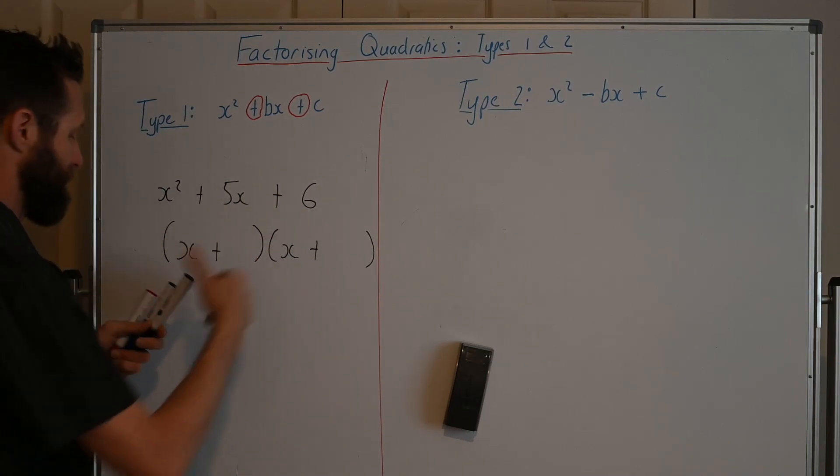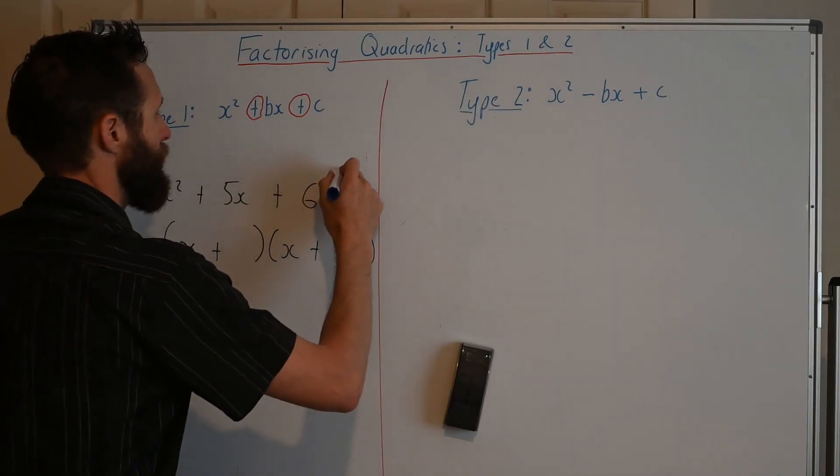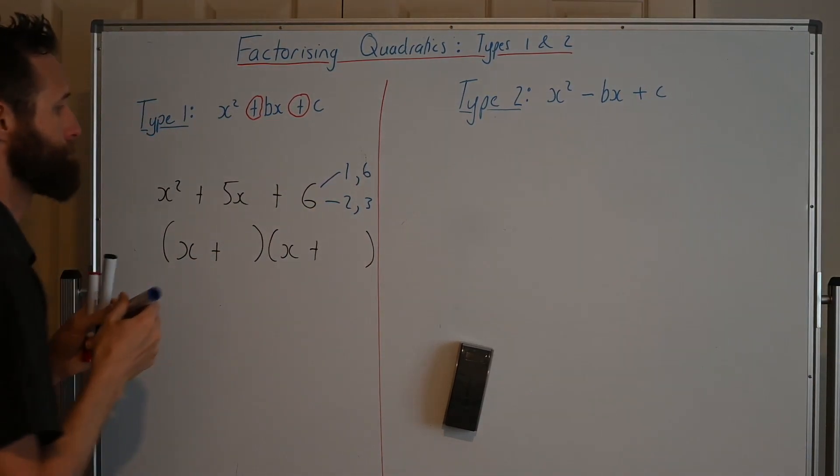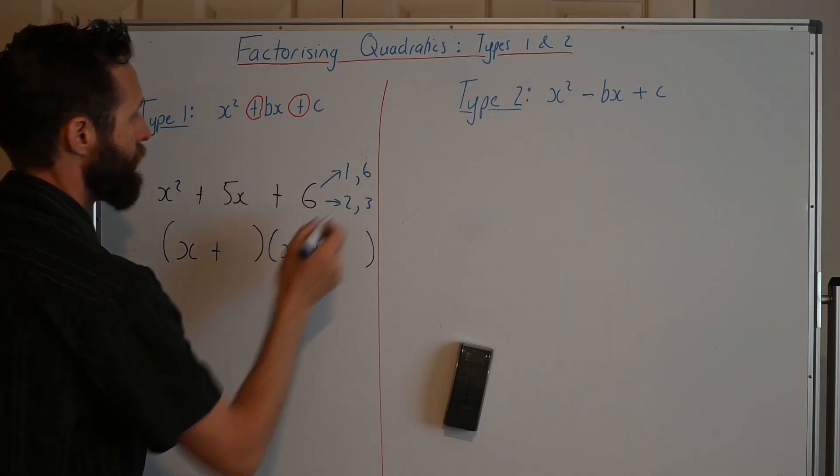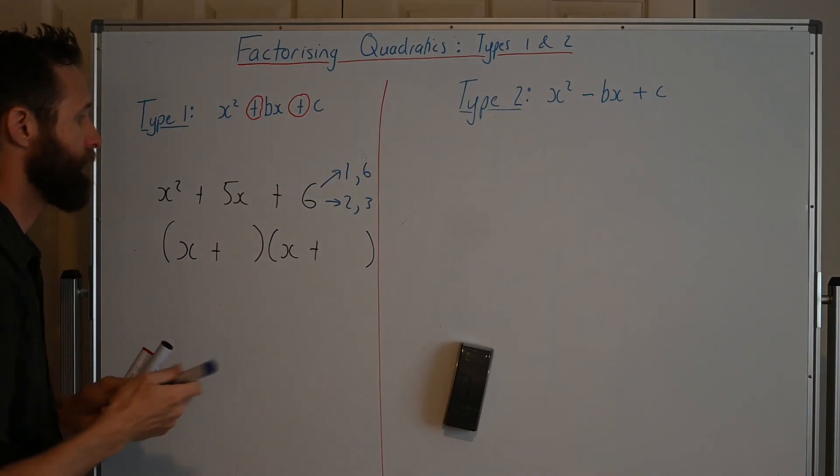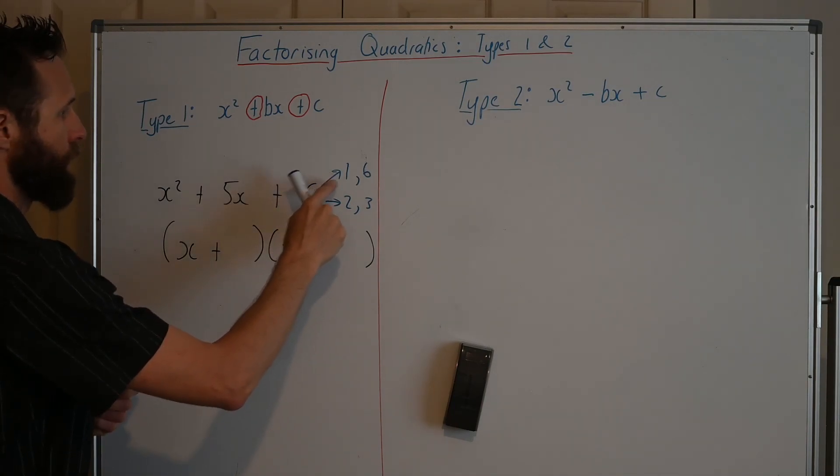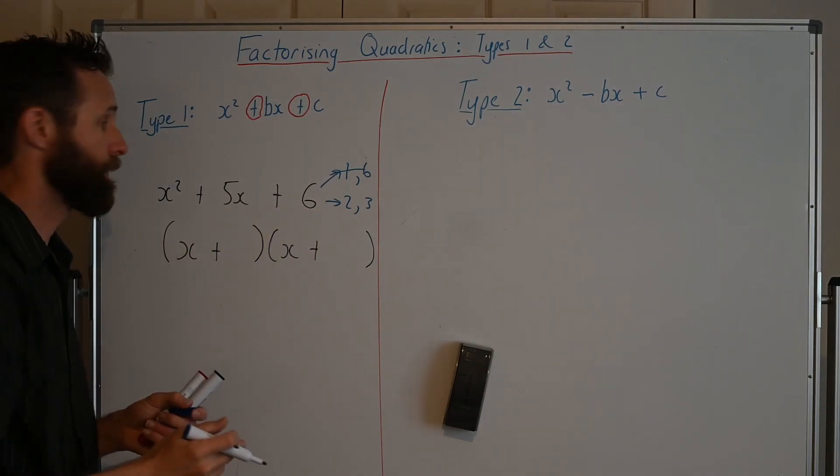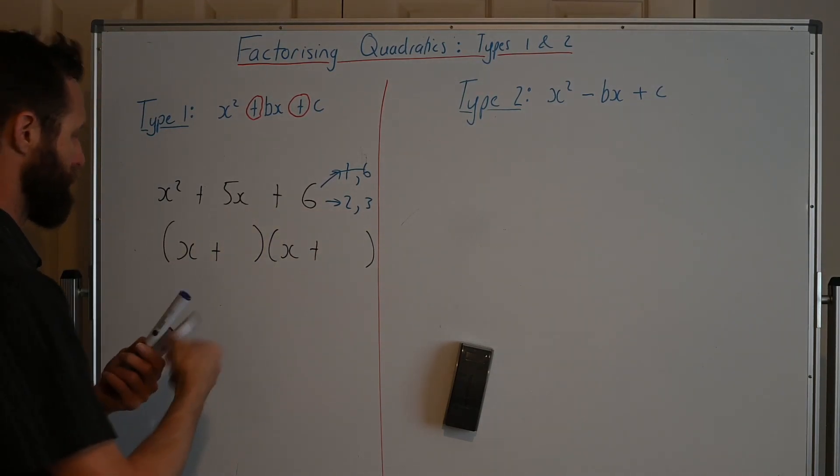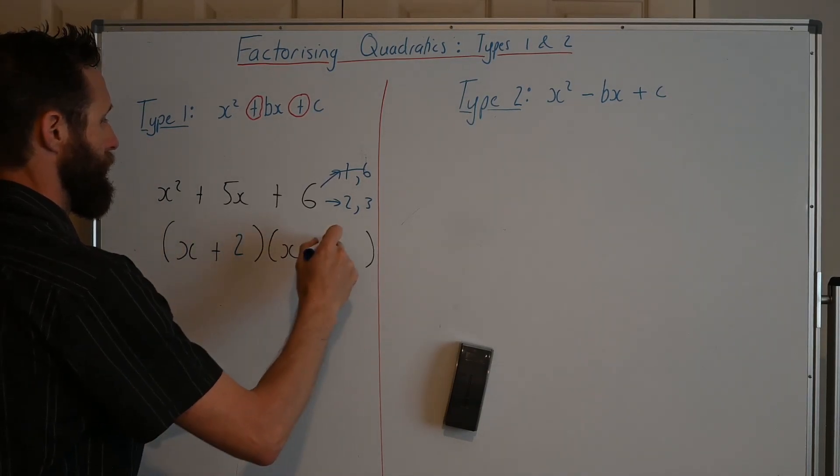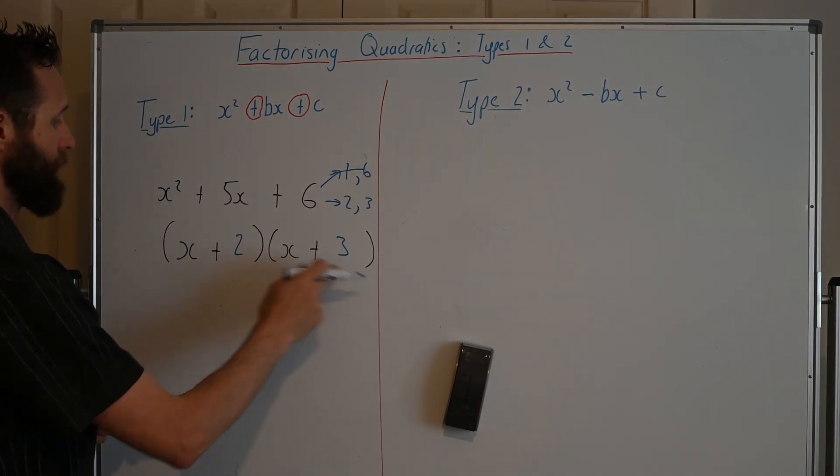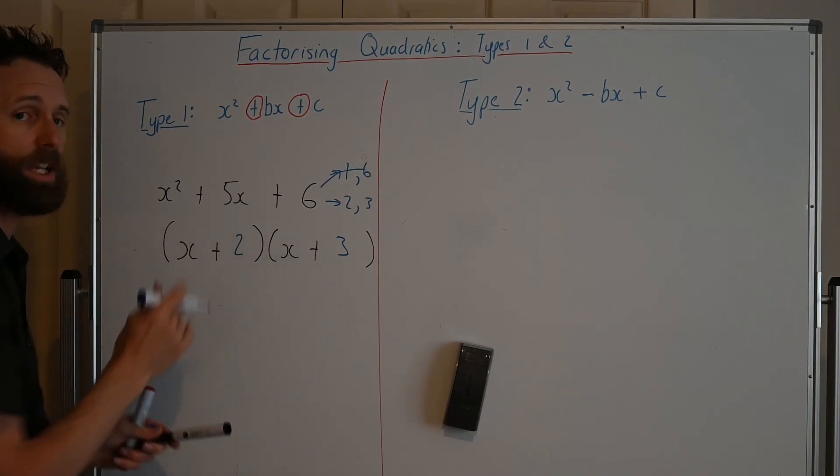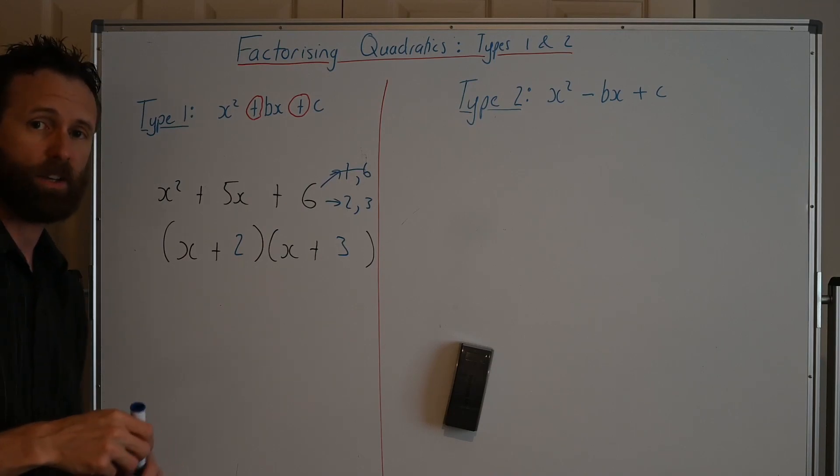And then we think about 6. Well, what are the factors of 6? Well, you've got 1 times 6 and you've got 2 times 3. Now, which pair adds to 5? Well, positive 1 and positive 6 is 7, so it's not that one. Positive 2 and positive 3, they add to 5. So we're going to have 2 and 3. That will give us a 6 at the end and we've got 3x for outers and 2x for inners and together they add to the 5x. And that would be that one factorized.